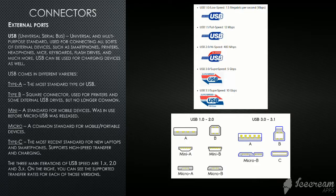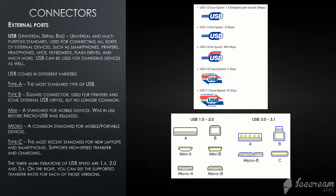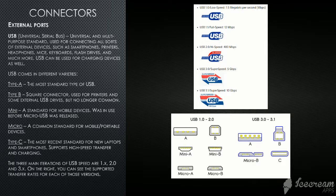The three main iterations of USB speeds are 1, 2, and 3. USB 1 supports 1.5 megabits per second, which equals less than 200 kilobytes per second. USB 1.1 supports 12 megabits per second, equal to 1.5 megabytes per second. USB 2 supports 480 megabits per second, equal to 60 megabytes per second. USB 3 and USB 3.1 support 5 to 10 gigabits per second, equal to 625 megabytes per second and 1.2 gigabytes per second respectively.